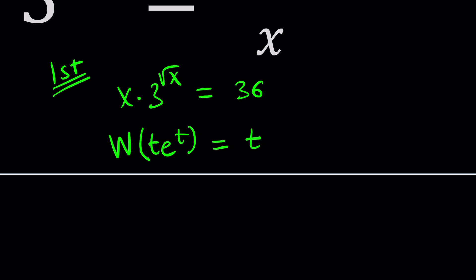How does Lambert's W function work? It's a big W acting upon t·eᵗ and giving us t as the output. It takes t·eᵗ as an input and gives t as an output — it's an inverse function. But there's no way to express it like natural log or any type of log, so we use a special W. You cannot express it explicitly. Our goal is going to be to bring our expression to this form.